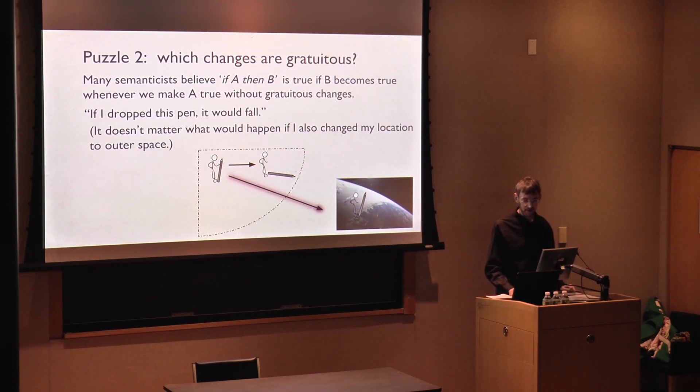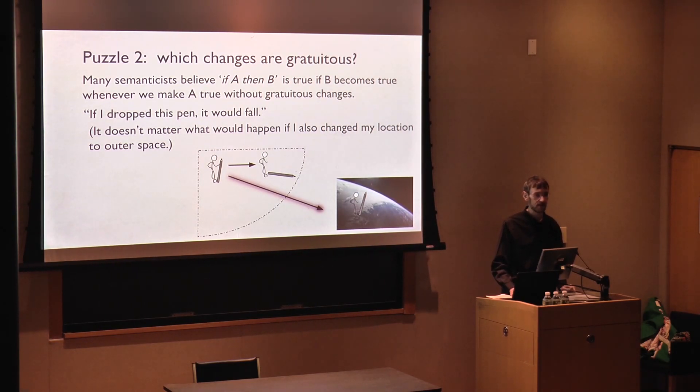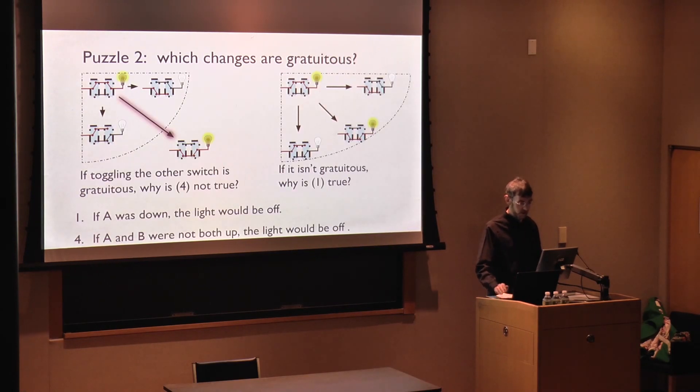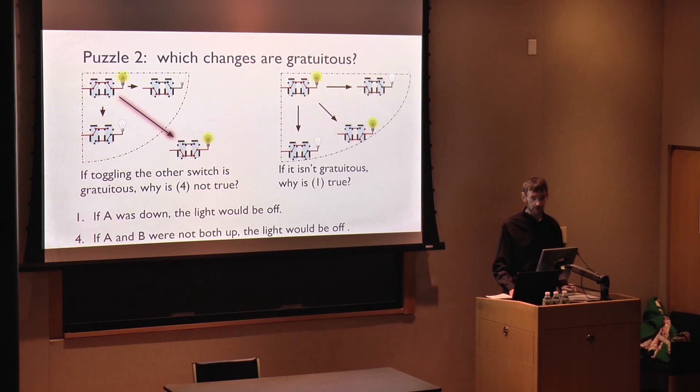Now, the dashed line corresponds to the boundary between those alternate states of affairs that we're willing to consider and the rest. I'm drawing a glowing red arrow for a gratuitous change, that is, a change that takes us outside this boundary. Now, think again about the first sentence. If switch A was down, the light would be off. We agree to this, even though toggling both switches at once would lead to the light being on. And it seems that the reason we agree with this sentence is that toggling switch B as well would be a gratuitous change as on the image on the left.